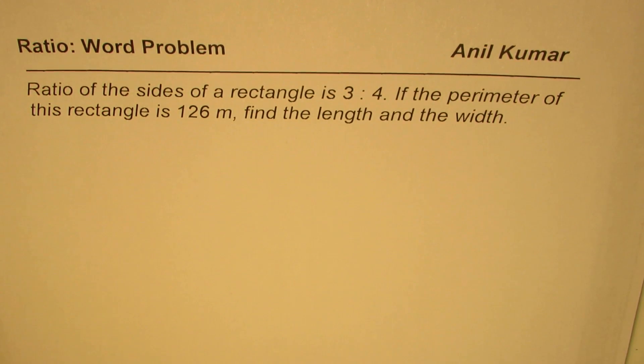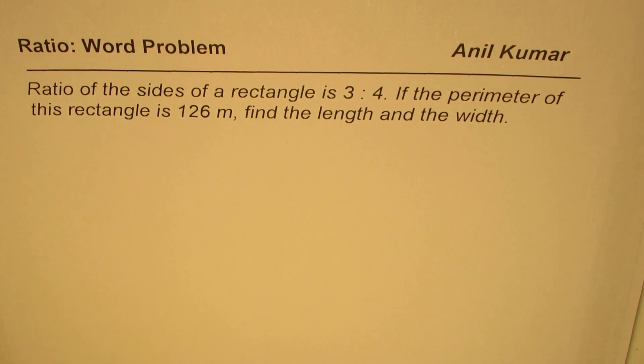Anil Kumar, here is a word problem on ratios. Ratio of sides of a rectangle is 3 to 4. If perimeter of this rectangle is 126 meters, find the length and width.